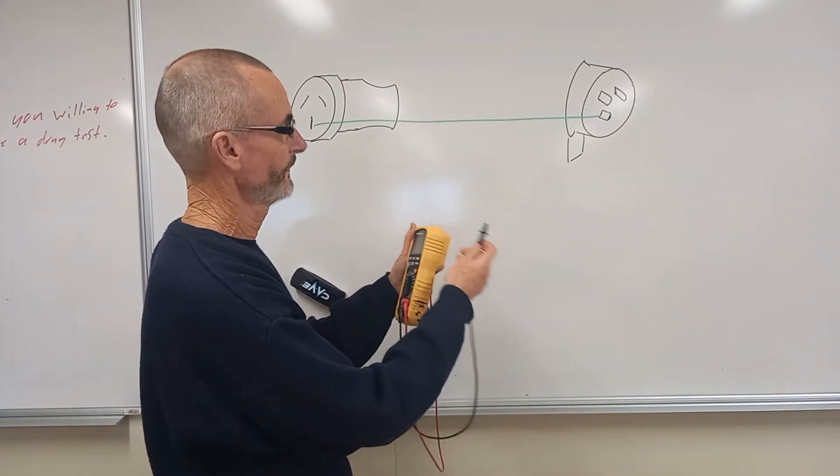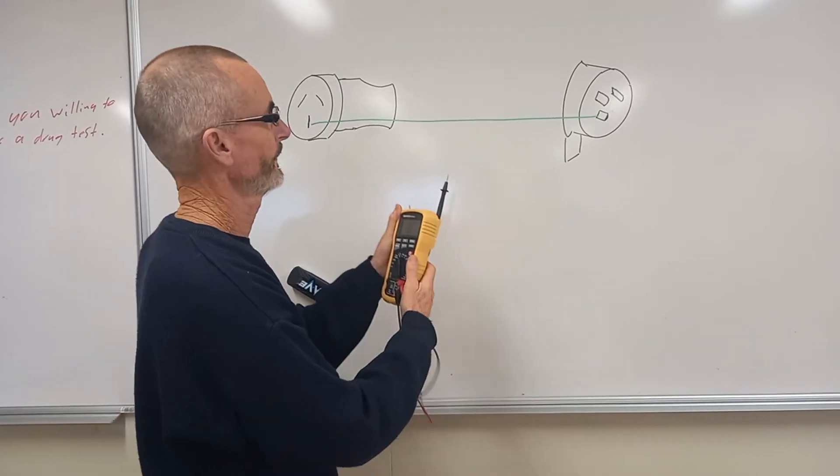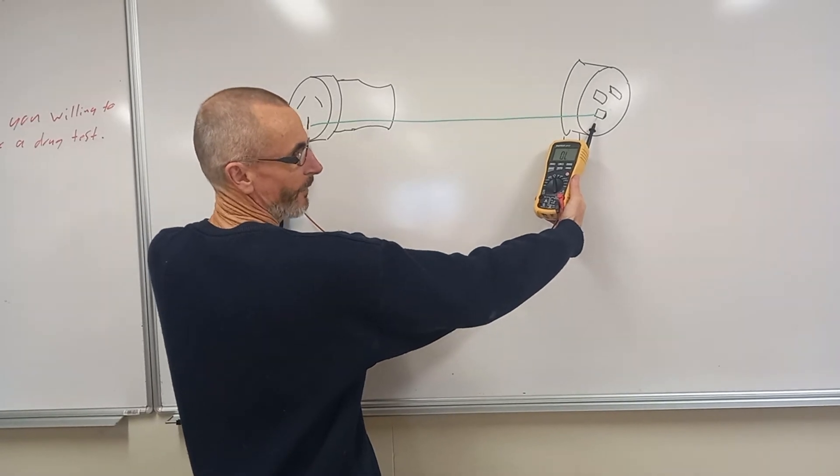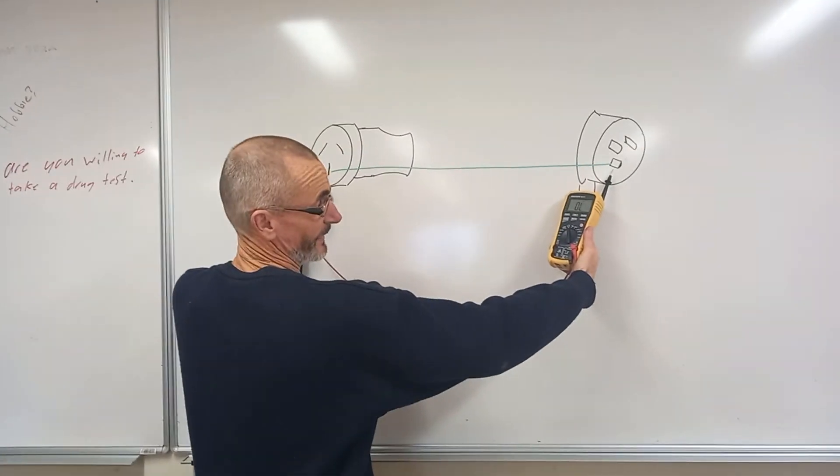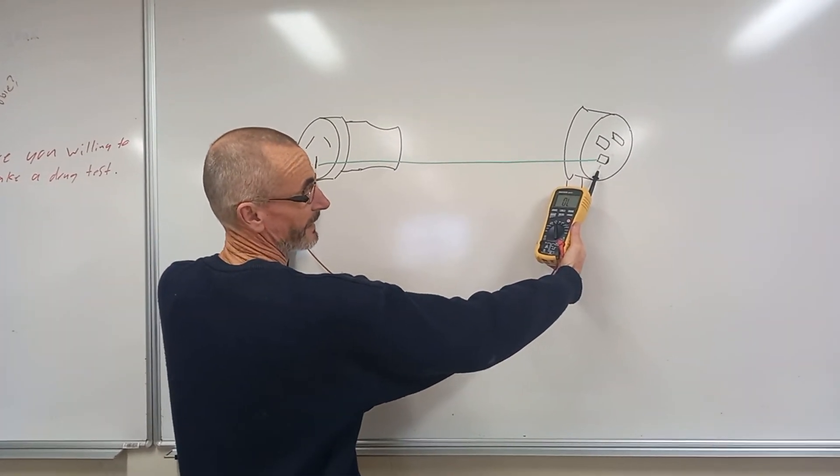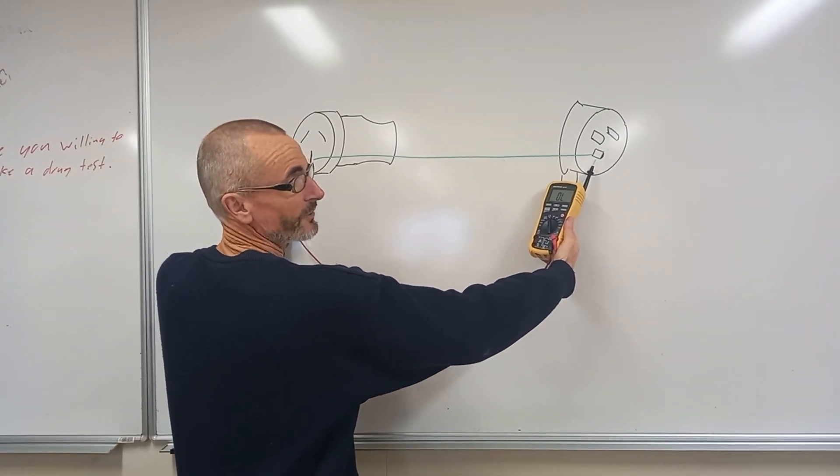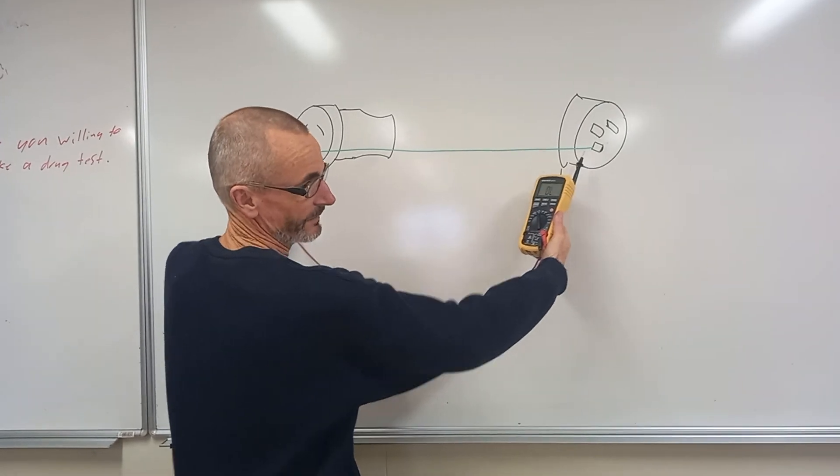So now what I need to do is measure from that point there and that point there. What I expect it will be very low ohms because it's a piece of copper wire. I expect it to be zero or very, very close to it. The lowest it's allowed to be is one ohm. Shall not exceed one ohm is the correct expression. That's the test we're going to do now.